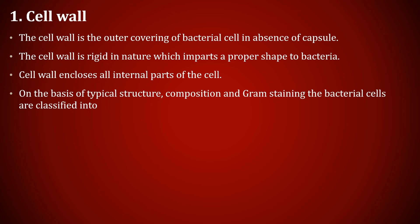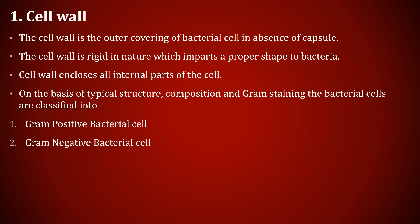On the basis of typical structure, composition, and gram staining, bacterial cells are classified into gram positive and gram negative bacterial cells. Gram positive bacterial cell is monolayered, thick, and homogenous — thicker than gram negative bacteria — and accounts for 10 to 50 percent of dry weight. The cell wall of gram positive bacteria is made up of peptidoglycan and teichoic acid. For gram negative bacteria, the cell wall is bi-layered, thinner, accounts for 10 to 20 percent of dry weight, and is made up of an inner peptidoglycan layer and an outer wall layer.